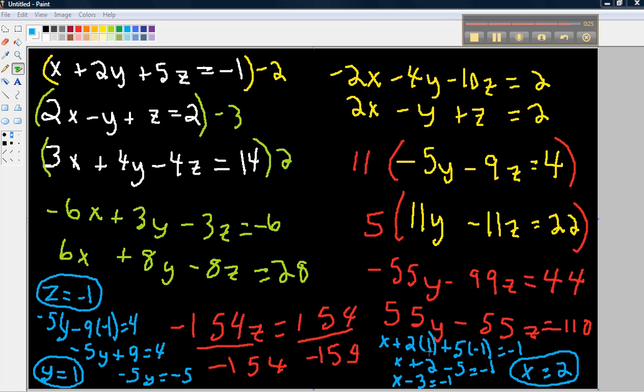I take y equals 1, plug it back in. Over here, in the blue, take my z, plug it in over here, solve for x here. So I have my solution, which is x equals 2, y equals 1, z equals negative 1.